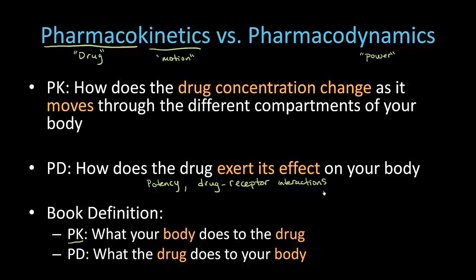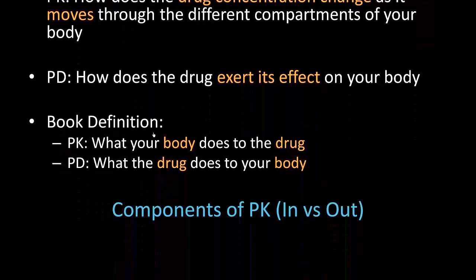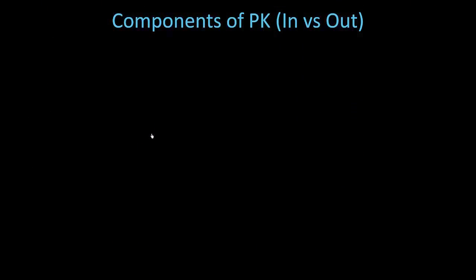So when I think of kinetics, where is it moving? Drugs need to enter our body, so half of pharmacokinetics is dealing with drugs entering our body, and the other half is dealing with drugs leaving our body. They need to enter, they need to leave. So what are the components of pharmacokinetics? Instead of writing enter and leave, I wrote in versus out.